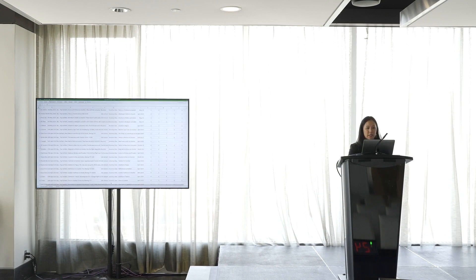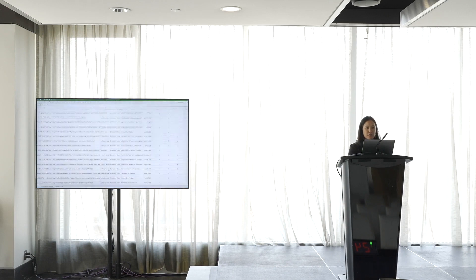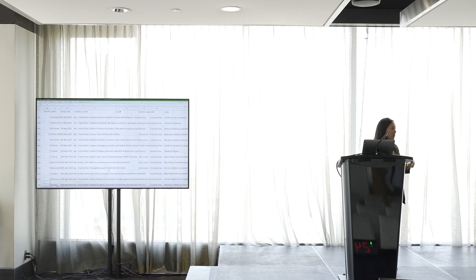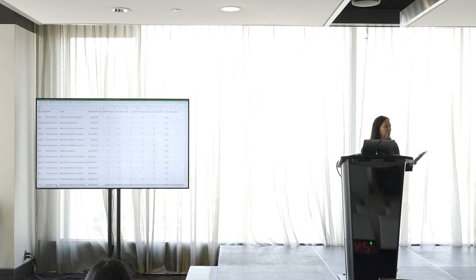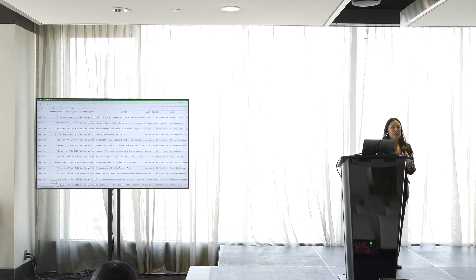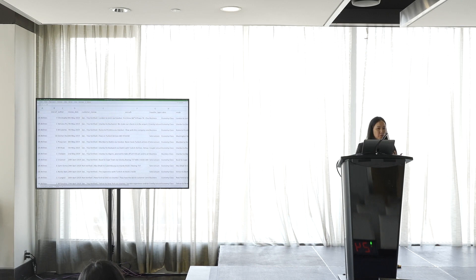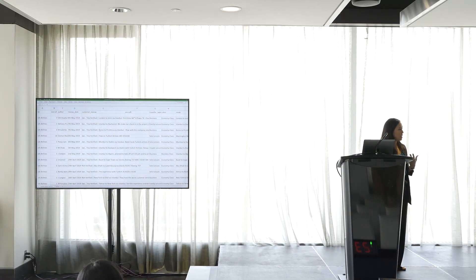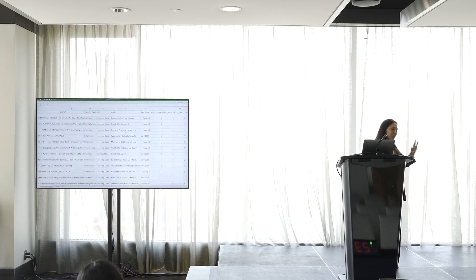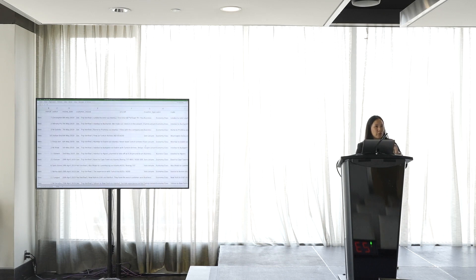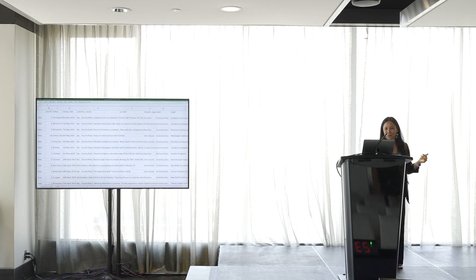We're going to look at a spreadsheet of airline reviews pulled from the web — trip, flight date, airline, itinerary, class, and survey ratings. Already I can see issues: every-other-row formatting, encoding errors, pipe-delimited concatenated columns to split out, and not one but three different date formats — 'May-19', 'April 2019', and '5th May 2019'. Date formatting is a classic headache.